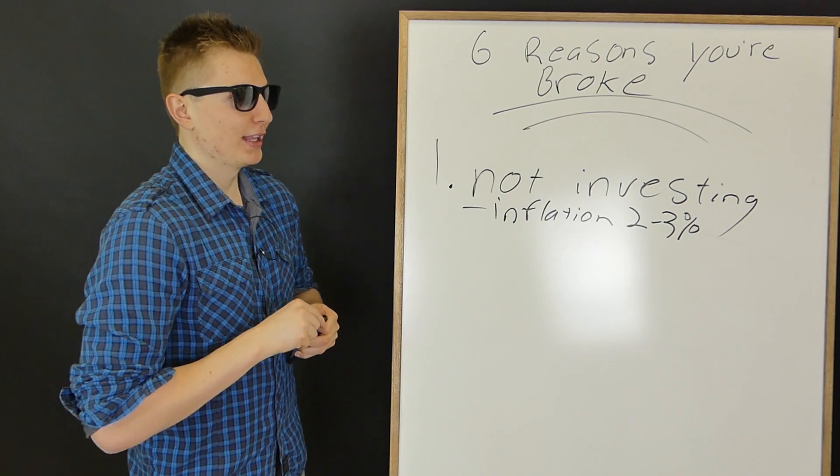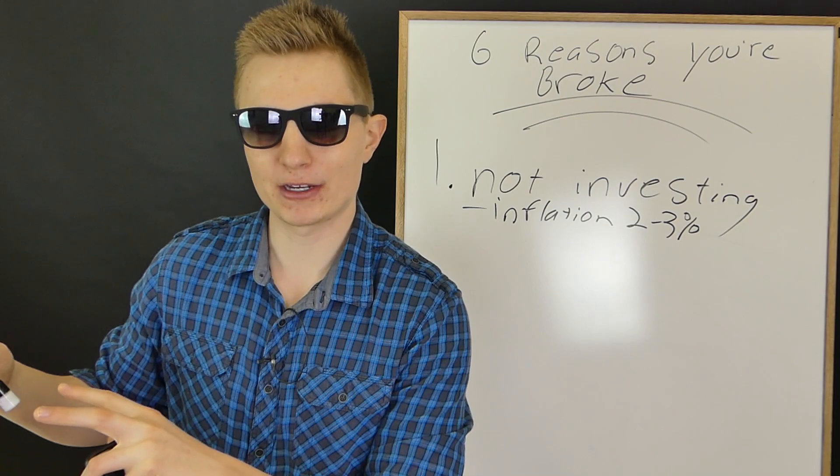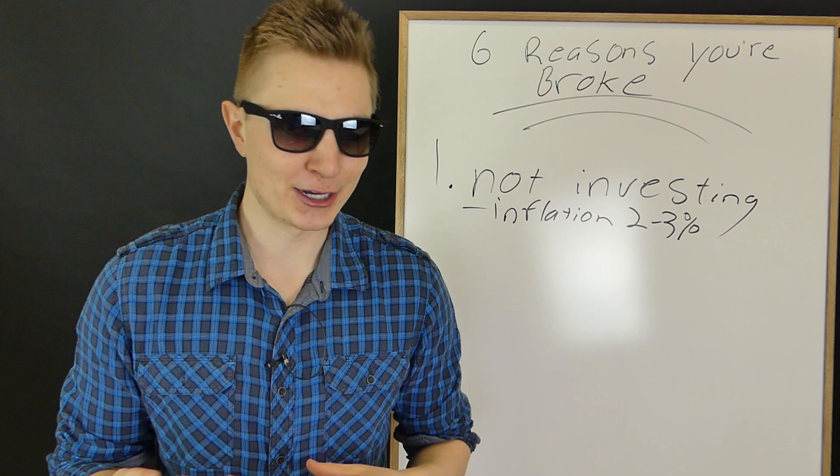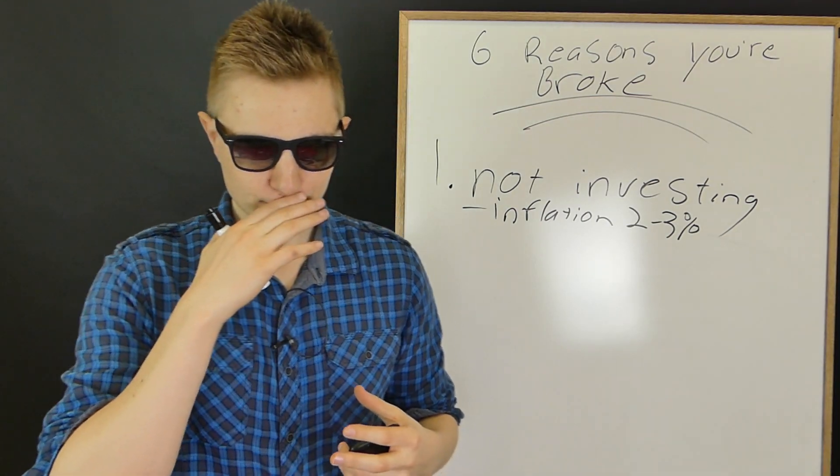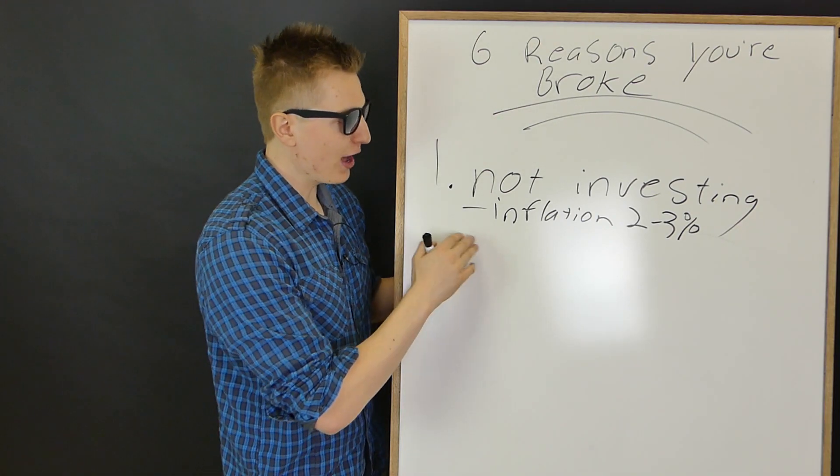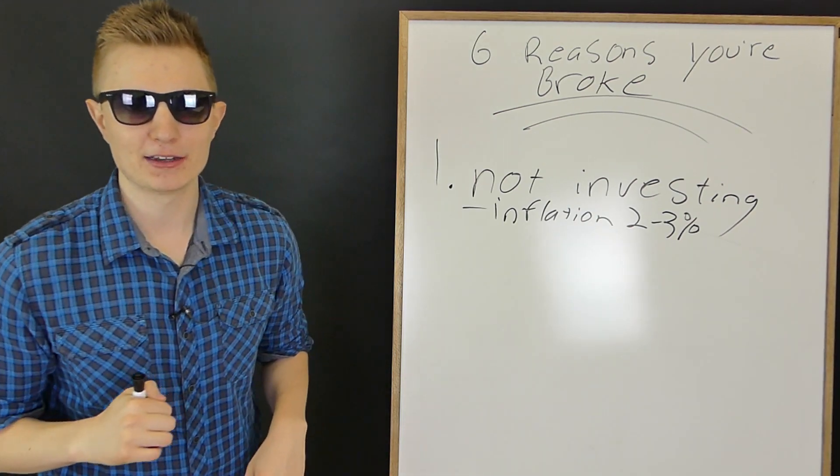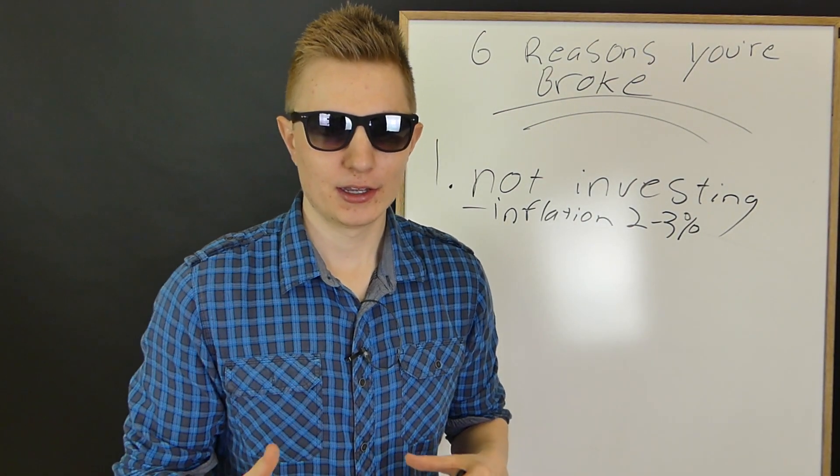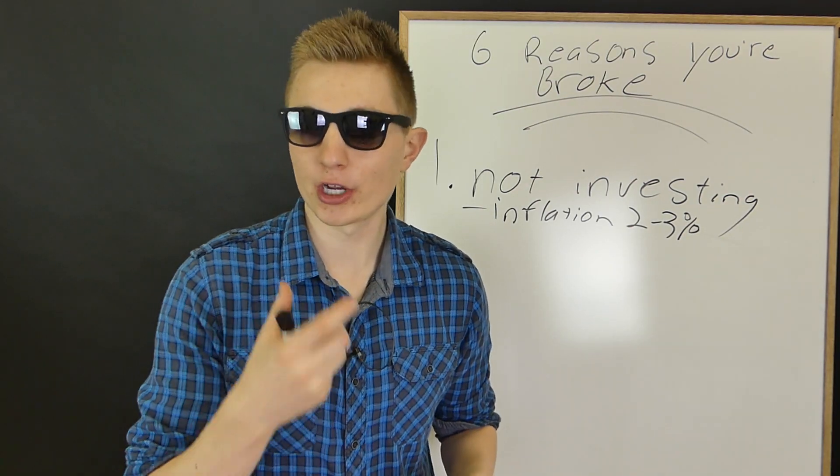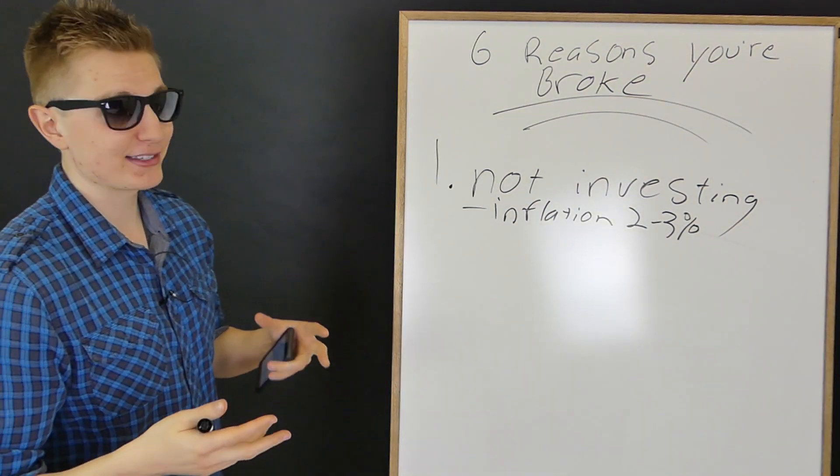So the value of your money erodes by two to three percent per year. This is not so fascinating because what happens is a lot of young people, they will leave their money in their savings or in their checking account where it sits there and you get 0.1 percent interest every single year. So if you leave your money in a savings or checking account, the value of your money erodes by essentially two to three percent every year. Think about that. If you have $10,000 in the bank and you just let it sit there, you're going to lose $200 to $300 of the value of that money every year.